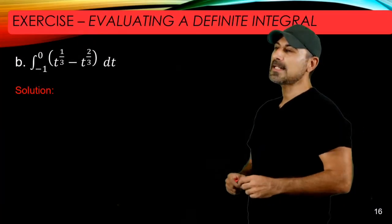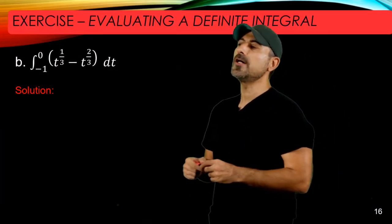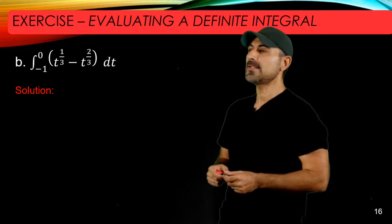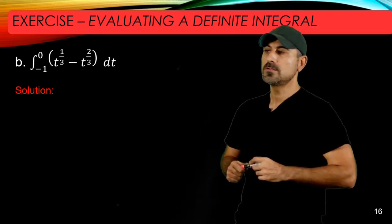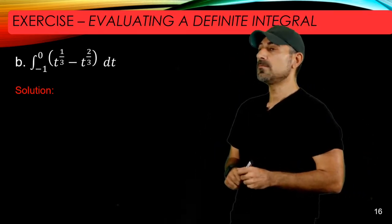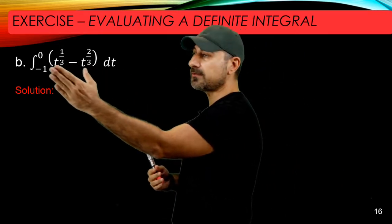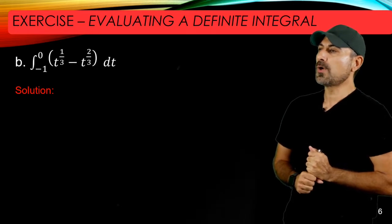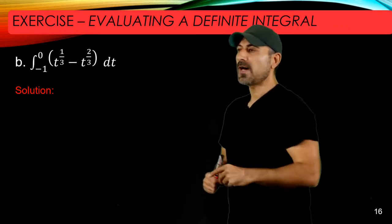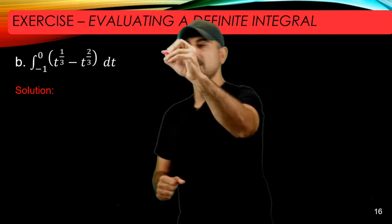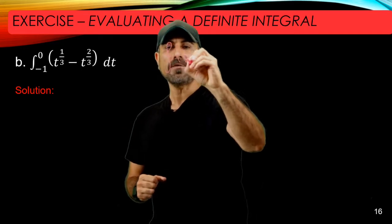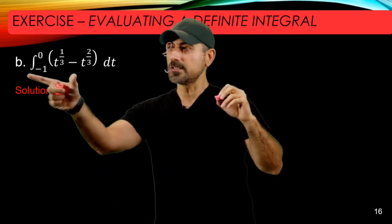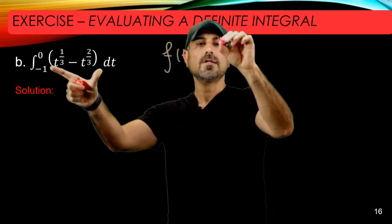The next example is the integral of t to the 1/3 minus t to the 2/3. It's good news that these are given as exponentials, so let's go ahead and find the anti-derivative of the little f. Little f in this case is the integrand, which is t to the power of 1/3 minus t to the power of 2/3.